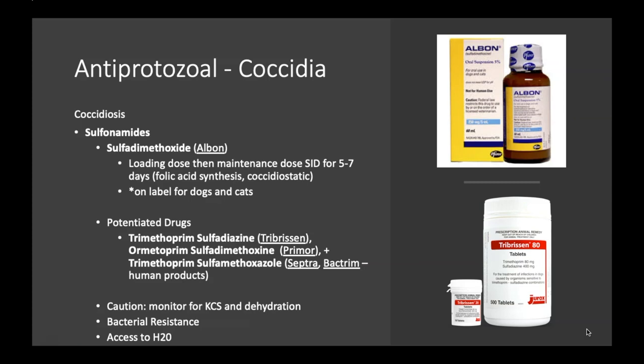If you work in shelter medicine, you will see a lot of coccidia. Coccidia can be self-limiting — animals get it, and if they have a good, healthy immune system, it can potentially resolve on its own. You see it more in shelter environments because those animals tend to have compromised immune systems due to higher levels of stress, meaning their immune system can't fight off the coccidia the way a fully healthy animal would.